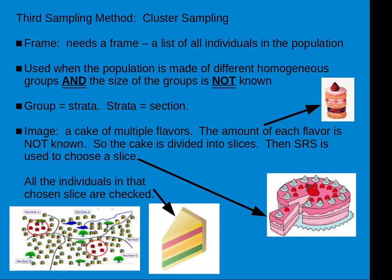The third sampling method is cluster sampling. This also needs a frame. It's used when the population is made of different homogenous groups, but the size of the groups is not known — similar to stratified sampling, but we don't know the group sizes. The cake image here is a cake of multiple flavors where the amount of each flavor is not known. We go around the cake and divide it into slices, then use simple random sampling to choose one of the slices, and all the individuals in that chosen slice are checked.